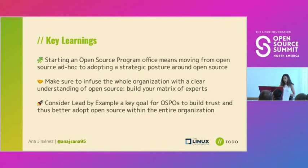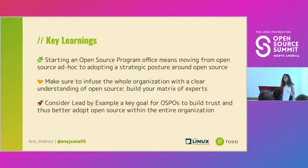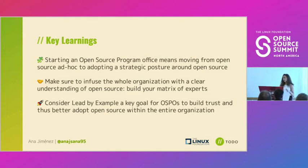To wrap up, I'd like to share some key learnings from a past panel discussion at the Linux Foundation two weeks ago, where Ports, Comcast, Bloomberg, and VMware talked about the value of the OSPO. The first learning is that starting an Open Source Program Office means moving from taking accidental decisions in terms of open source — like 'there is a vulnerability here, I need to take care of this' — to adopting a strategic posture around open source, putting a strategy in place to accelerate open source and innovation.